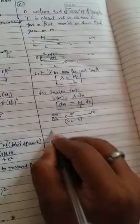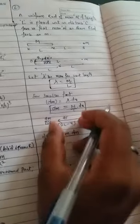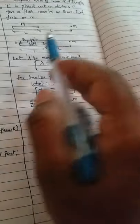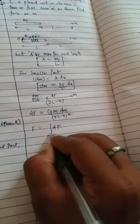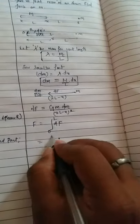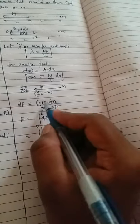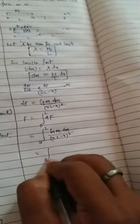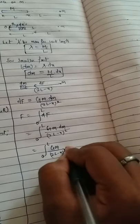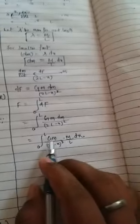The small force dF between element dm and mass m is: dF = G·m·dm / (2L - x)². To find total force F, we integrate dF from x = 0 to x = L. Substituting dm = (M/L)dx: F = integral from 0 to L of [G·m·(M/L) / (2L - x)²] dx.